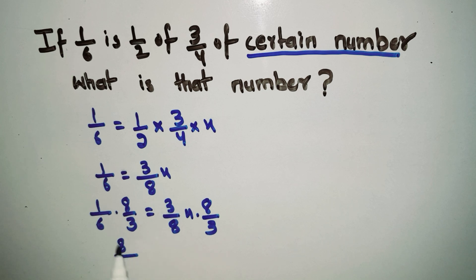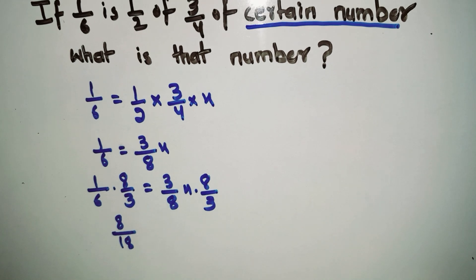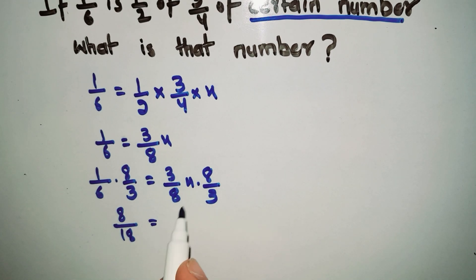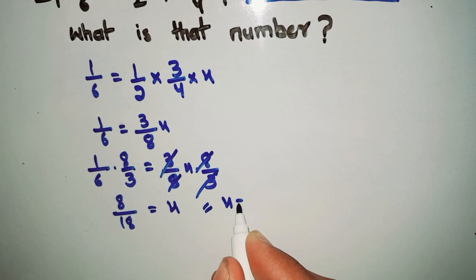This equals 8/18. The 8 and 3 cancel on the right side, so it equals X. Therefore, X equals 8/18.